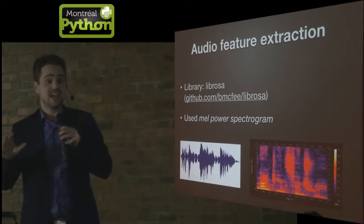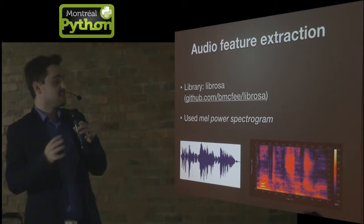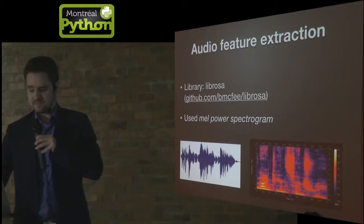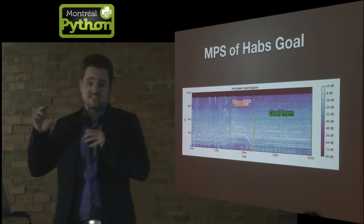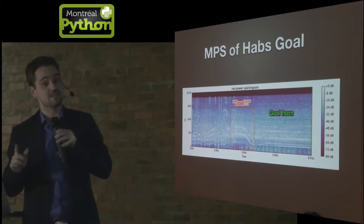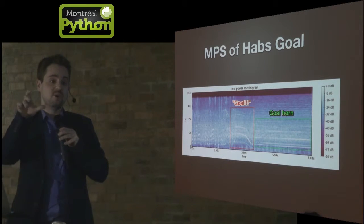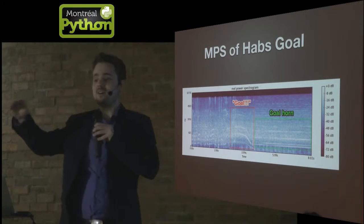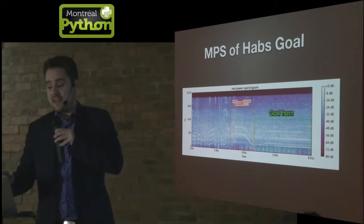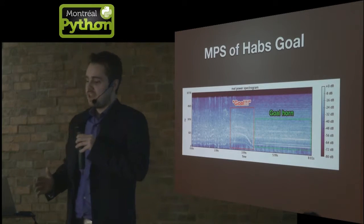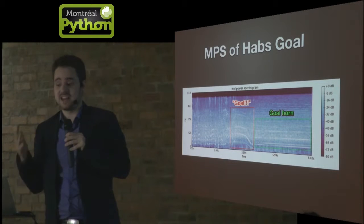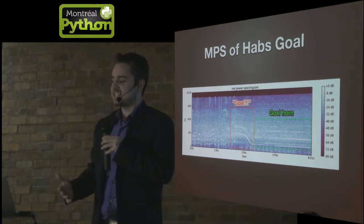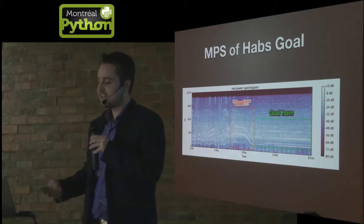What's great about the spectrogram is you can actually see what the sound looks like, and it's at the basis of probably every smart audio system. This is the Mel power spectrogram of a Habs goal — I highlighted the actual moment where the commentator yells 'but!' You can see the white waves going down as he's yelling. Then there's a goal horn in straight lines, because a goal horn is constant. It's pretty clear where he's yelling goal, so I thought maybe I can actually make this work.